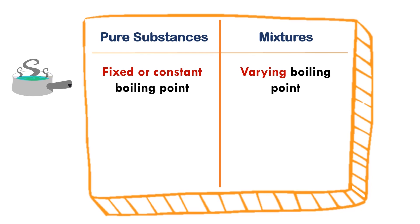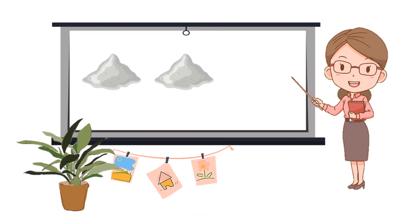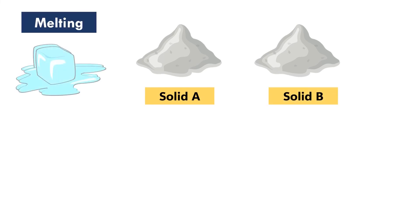On the other hand, if the unknown sample is a solid, we can use melting to identify which one is a substance or a mixture. Let us label the sample as solid A and solid B. During melting, solid A melts completely and smoothly within a short period of time, while in solid B, some portions seem to be not melting.